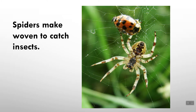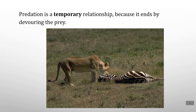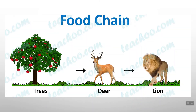The relationship between a spider and an insect is also predation — the spider is the predator and the insect is the prey. Spiders make webs to catch insects; the insects stick to the web, allowing the spider to catch its prey. Predation is a temporary relationship because it ends by devouring or killing the prey — it is not a permanent relationship.